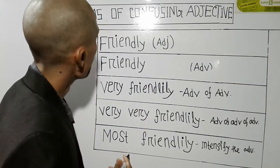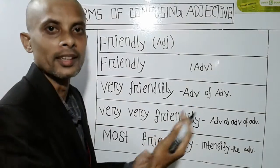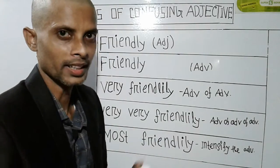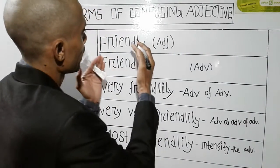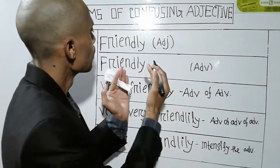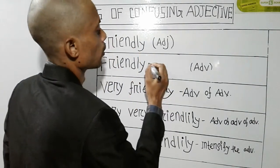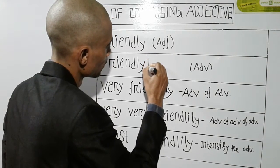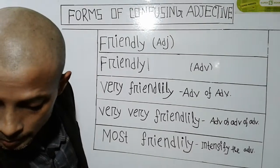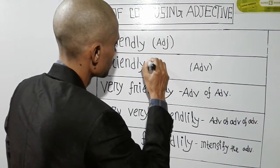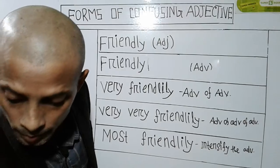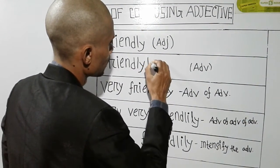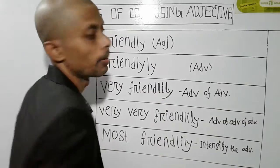What are the adverbs? The -ly ending is part of a verb. This is called an adverb. If you add the adjective, let's add the -ly ending.